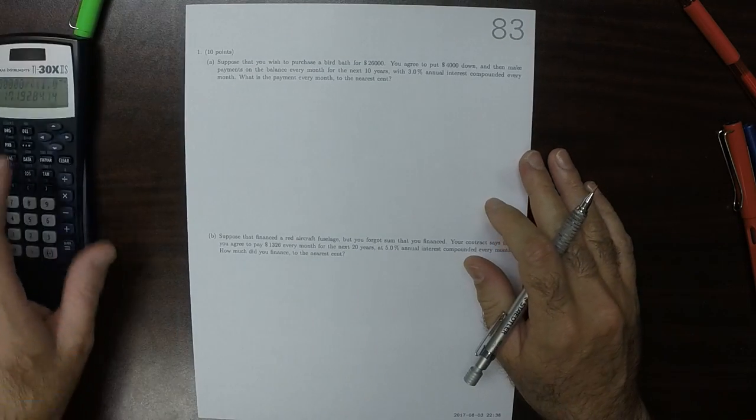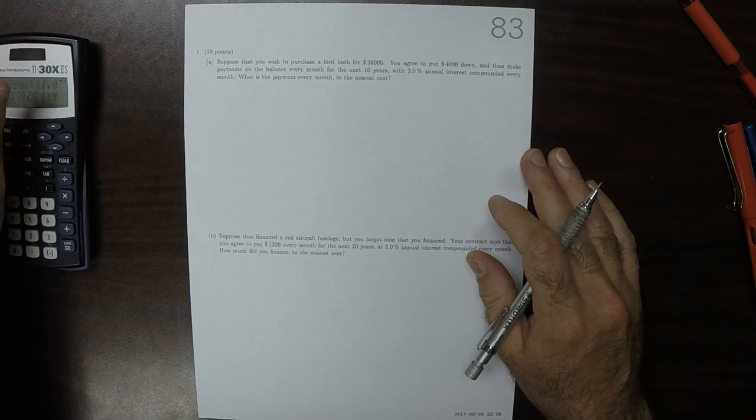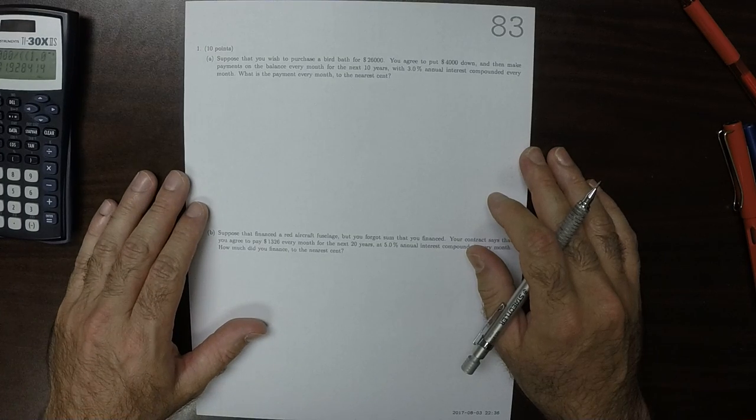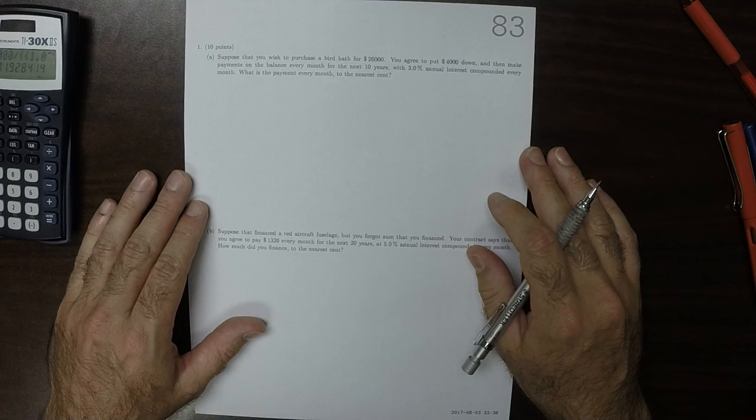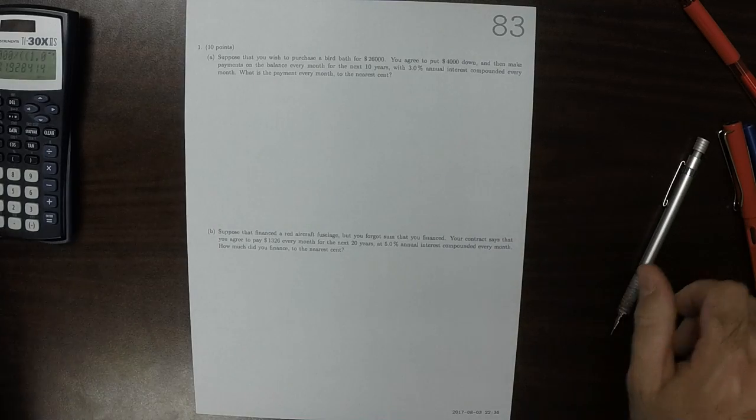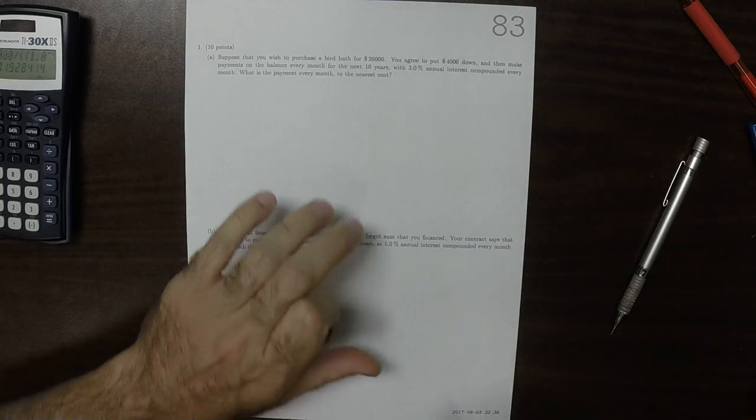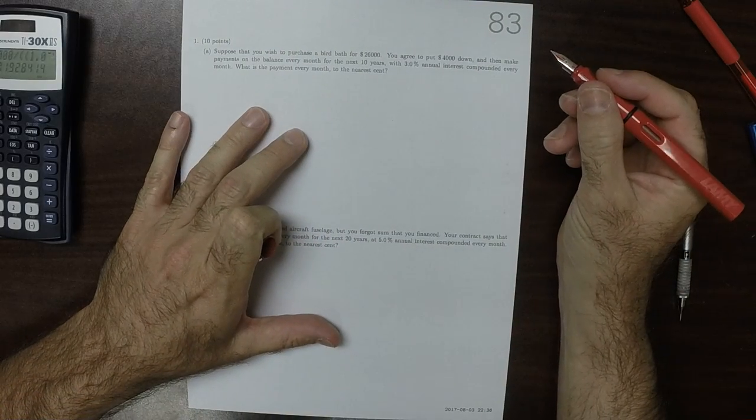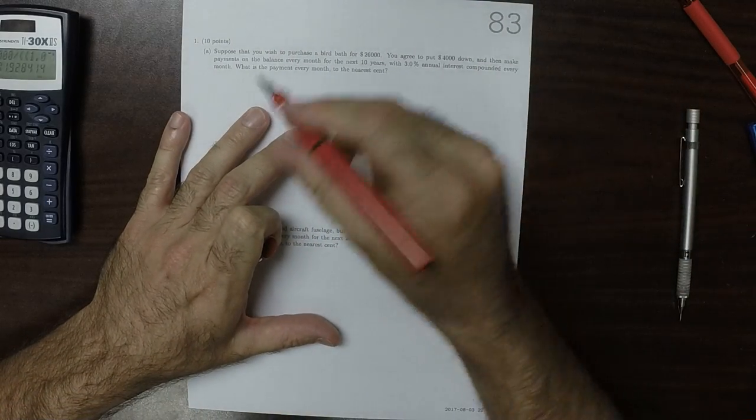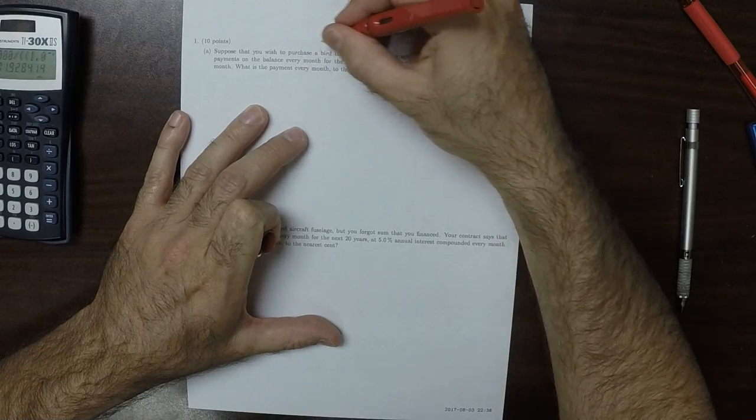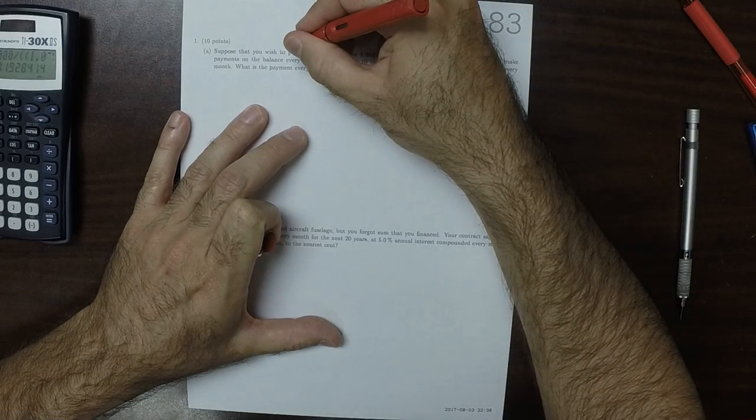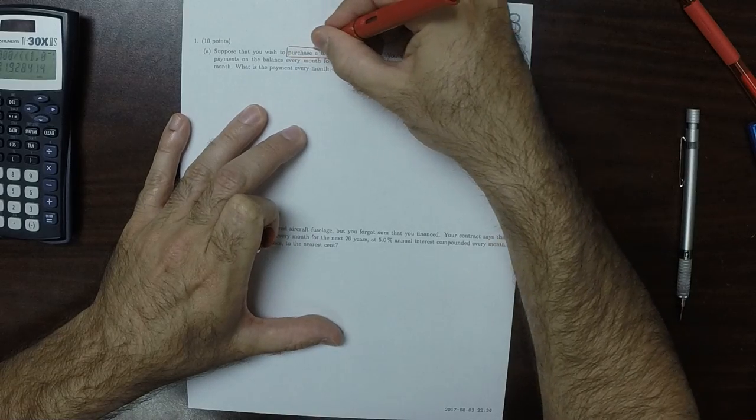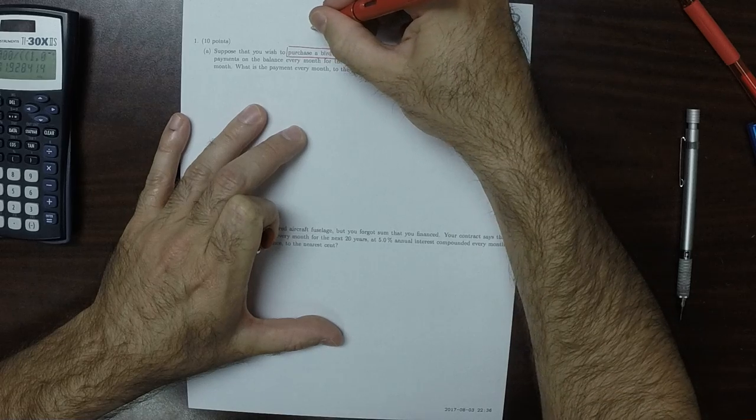This is the solution to Written Homework 83. So, you want to purchase a birdbath for $26,000. And this is the price right now.